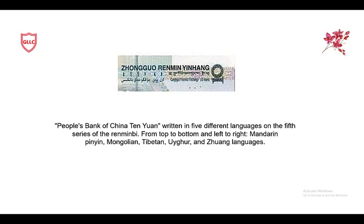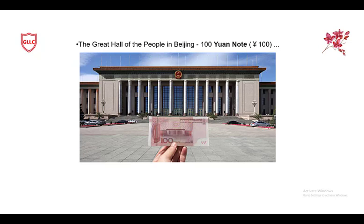An interesting fact about Chinese currency notes: on the People's Bank of China ten Yuan note, for example, text is written in five different languages. On the fifth series of Renminbi, from top to bottom and left to right, the languages are Mandarin Pinyin, Mongolian, Tibetan, Uyghur, and Zhuang. These five languages appear on every currency note.